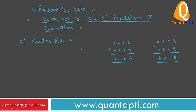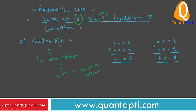The fundamental rule for searching 0 and 9 in Addition or Subtraction is also known as the Addition Rule. A good hint to find 0 or 9 is to look for a column containing 2 or 3 identical letters. Always remember: if you can see 2 or 3 identical digits in the same column, you can use the Addition Rule to search for 0 and 9 in that arithmetic problem.